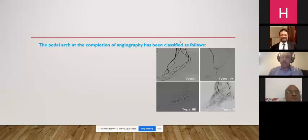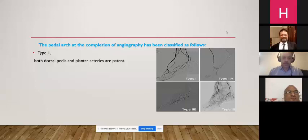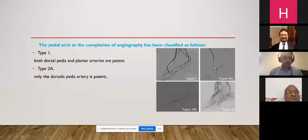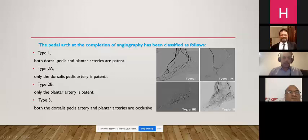The pedal arch at completion angiogram has been classified into several types. Type 1: both the dorsalis pedis and plantar arteries are patent. Type 2a: the dorsalis pedis artery only is patent. Type 2b: only the plantar artery is patent. Type 3: both the dorsalis pedis and plantar arteries are occluded.